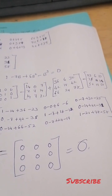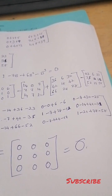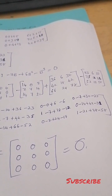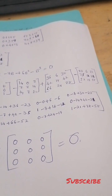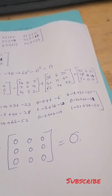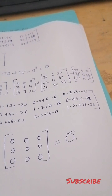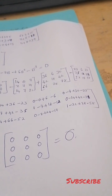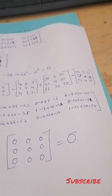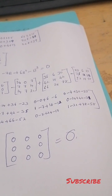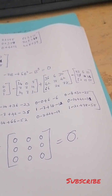Then we have 6B squared, which we already computed as: 36, 6, 30, 42, 18, 42, 66, 24, 78. Minus B cubed, which we already computed as: 23, 6, 23, 35, 12, 31, 52, 17, 58.